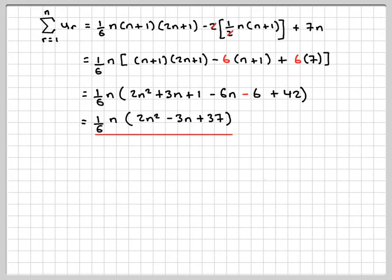We're asked to check this answer, so first of all, when n is 3, our three terms when added together will be 6 plus 7 plus 10, which gives me 23. And then we put n equals 3 into here, we get 1 sixth times 3 times 2 times 3 squared minus 3 times 3 plus 37.